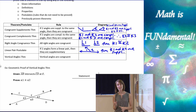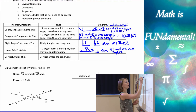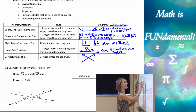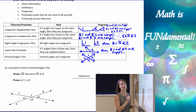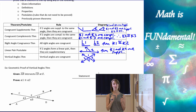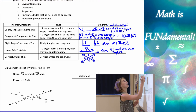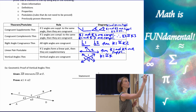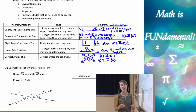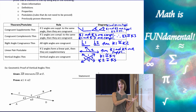And the last one: the Vertical Angles Theorem states that vertical angles are congruent. So we have angles one, two, three, and four. I have four different angles and two pairs of vertical angles. Angle one is congruent to angle four, and angle two is congruent to angle three. So if we have two vertical angles, we can state that they're congruent.